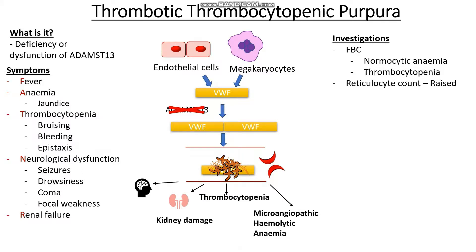The next thing that we want to do, because we have this degree of potential hemolysis going on, is do a reticulocyte count. And remember in our anemia videos, if we have hemolysis going on, our reticulocyte count is going to be raised, because our body is trying to compensate. Another thing that we want to do is a direct Coombs test, which helps us to differentiate between an autoimmune hemolytic anemia and a microangiopathic hemolytic anemia. A direct Coombs test is negative in thrombotic thrombocytopenic purpura, or TTP.